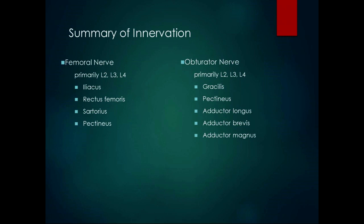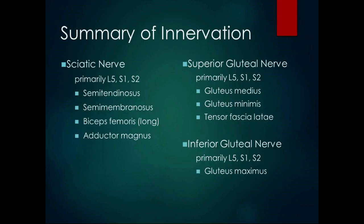A summary of hip innervation: the femoral nerve innervates the anterior muscles that primarily perform flexion — iliacus, rectus femoris, sartorius, and part of pectineus. The obturator nerve primarily innervates muscles that perform adduction — gracilis, pectineus, adductor longus, adductor brevis, and adductor magnus. The sciatic nerve innervates primarily the extensors on the posterior side — semitendinosus, semimembranosus, long head of the biceps femoris, and adductor magnus. The superior gluteal nerve innervates gluteus medius, gluteus minimus, and TFL. The inferior gluteal nerve innervates the gluteus maximus.